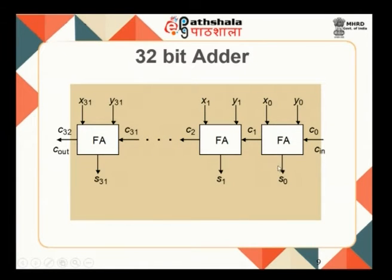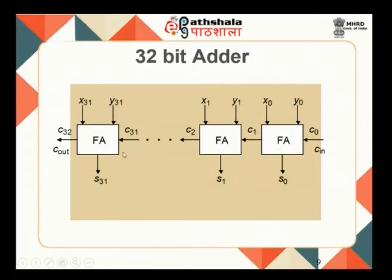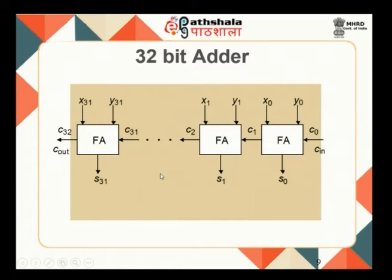If you look at the construction of a 32-bit adder, the full adder circuit is capable of doing addition of 1 stage — taking 3 inputs and producing 1 sum output and 1 carry output. For a 32-bit adder, you need 32 such stages of full adders. Each takes X0, Y0 through X31, Y31 as inputs with input carry C0, producing sum bits and carry bits cascaded through all 32 stages. To construct a 64-bit adder, you simply increase the number of stages to 64.